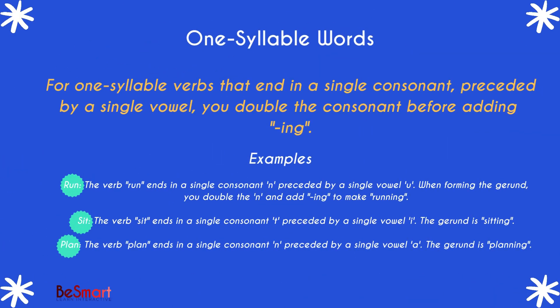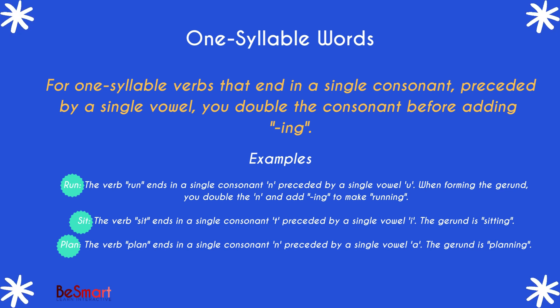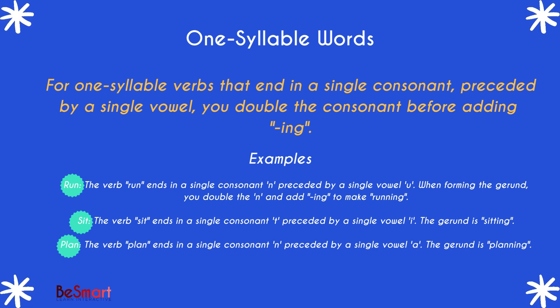Our first rule covers one-syllable words. If a one-syllable verb ends in a single consonant preceded by a single vowel, you double the consonant before adding -ing. For example, the verb run becomes running. Other examples include sit becoming sitting and plan becoming planning. Remember, this rule only applies when the word is one syllable and ends in a single consonant.